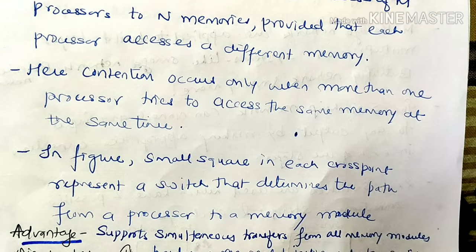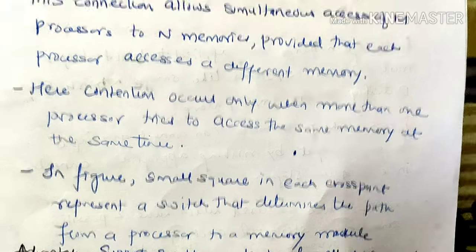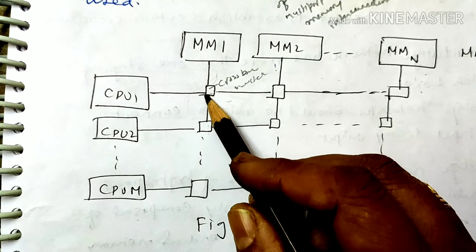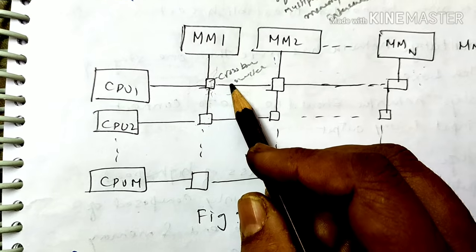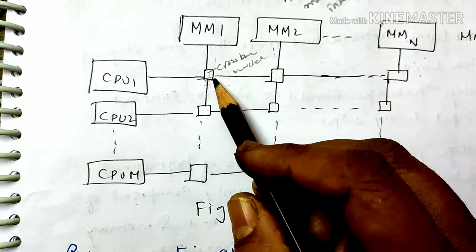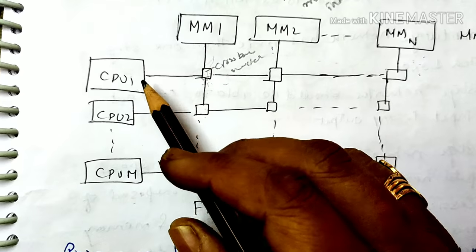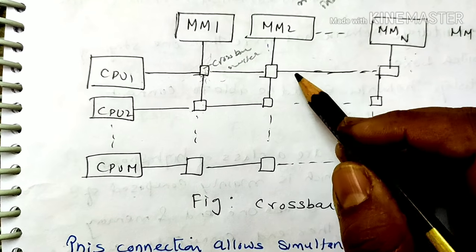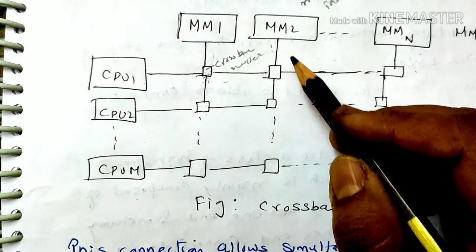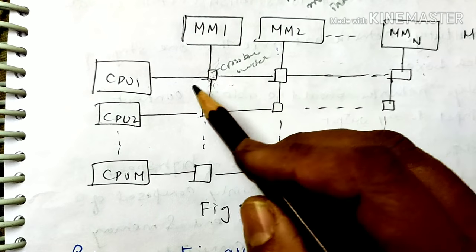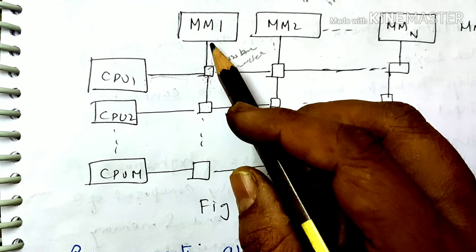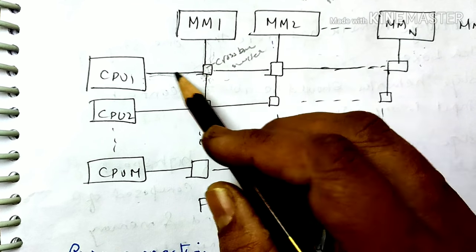In the figure, a small square at each cross point represents a switch that determines the path from a processor to a memory module. These crossbar switches at each cross point determine which processor can access which memory module — for example, CPU1 can be connected to a specific memory module via its corresponding crossbar switch.